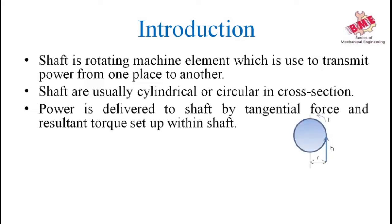In the figure, we can see that Ft is the tangential force and T (capital) is the torque induced in the shaft when it is rotating by means of a motor or any other machine. Therefore, the torque is given by T = Ft × r, where r is the radius of the shaft.